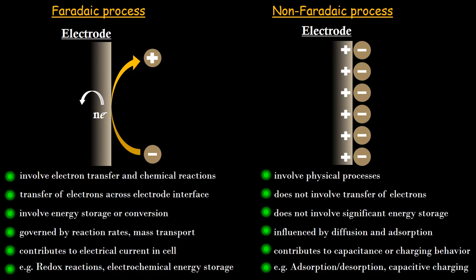Coming to the characteristics of faradic and non-faradic processes, here we have jotted down a few points which will be very important for fundamental understanding, and we recommend you note down all the points mentioned. The first point regarding the faradic process is that it involves electron transfer and chemical reactions. A chemical heterogeneous reaction is taking place on the electrode surface, and thereby electronic exchange is taking place — that is what a faradic process is.